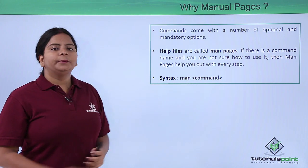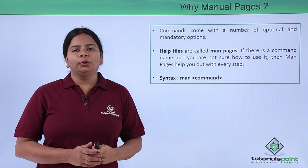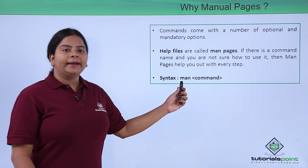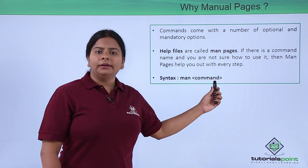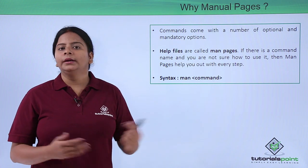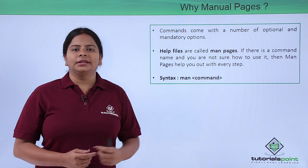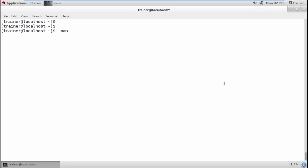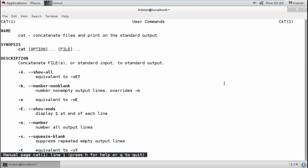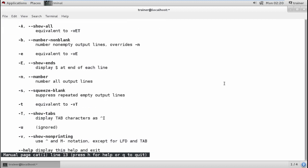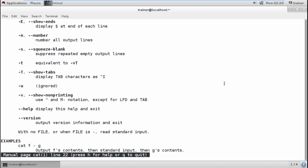To get access to man pages, you do not have to move into the library. Just at the prompt, type man followed by the name of the command you want to check. So we can check command parameters by using the man command from anywhere. For example, if I want to search for the cat command and see what parameters it has, we can check for it. It will show you why we use the cat command and what its usage is.